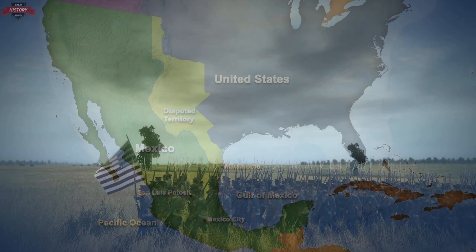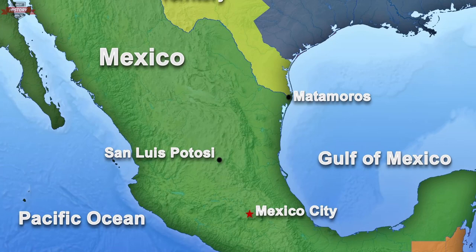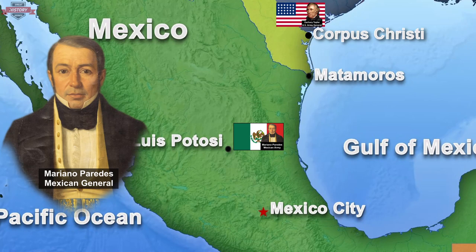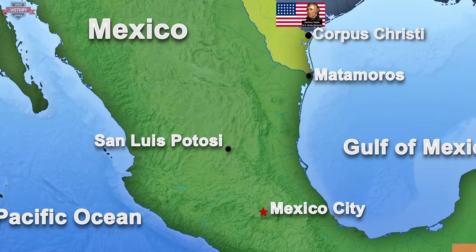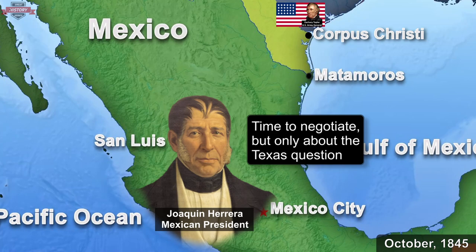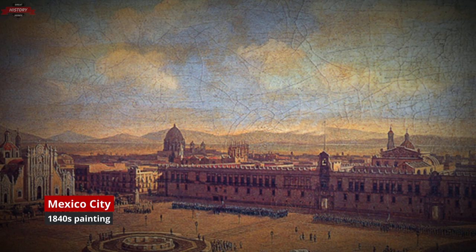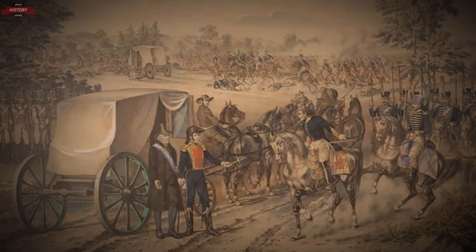The initial Mexican reaction to Taylor's occupation of Corpus Christi was to gather an army in the city of San Luis Potosi in central Mexico, 430 miles or 690 kilometers away from Matamoros. The commander of this army was General Mariano Paredes, a conservative hardliner in favor of fighting the United States. Mexican President Herrera knew that Texas was lost. However, he would not publicly admit it as this would ensure a military revolt. Trying to avoid a war, Herrera accepted to negotiate with an American special envoy over the issue of Texas.